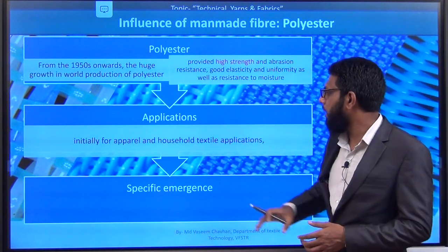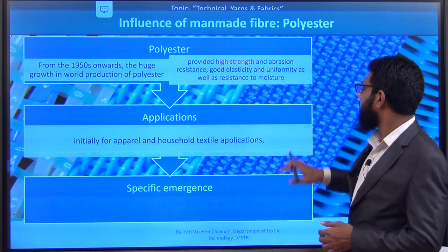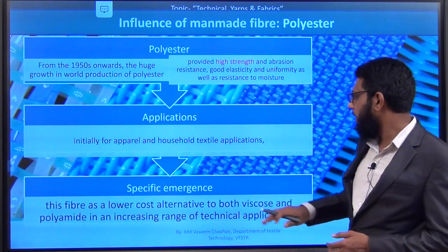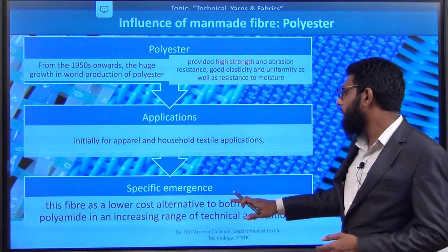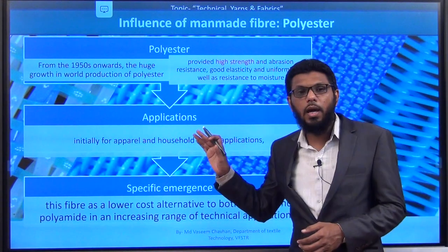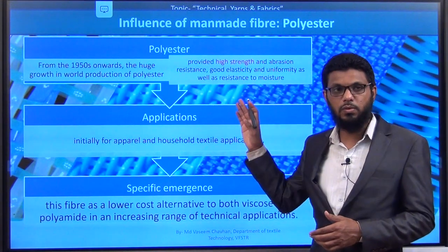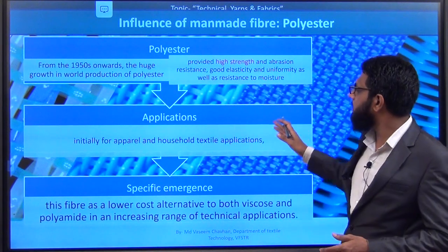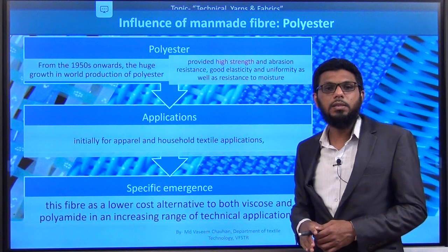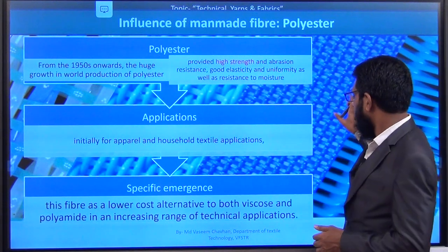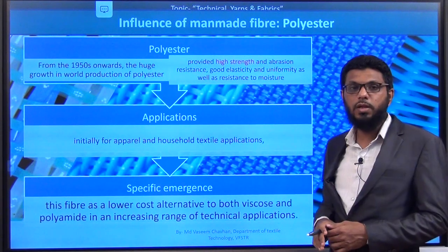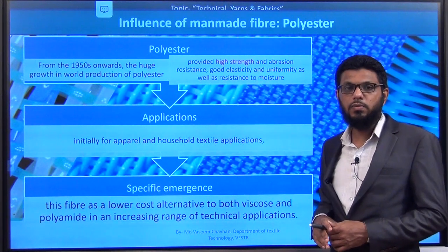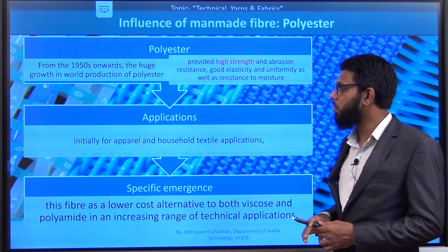Initially polyester was introduced for apparel and household textile, but because of its superior quality and advantages this fiber is now an alternative to both viscose and polyamide fiber. Most of the applications we discussed for viscose and nylon have been replaced by polyester. In the coming lectures we will see how it can be used in further detail.